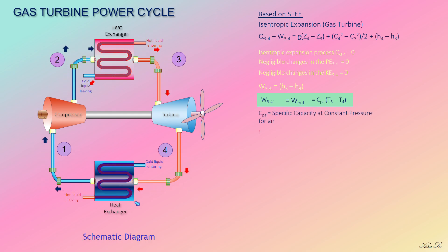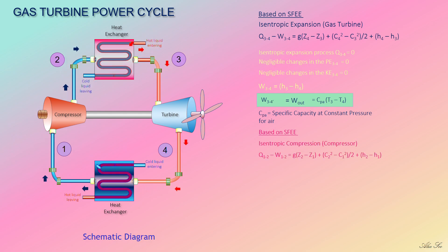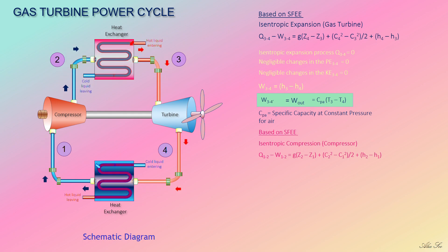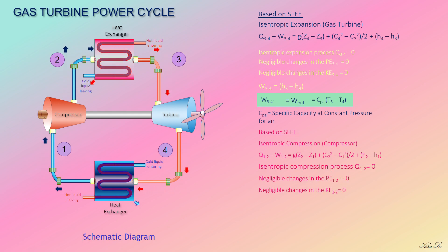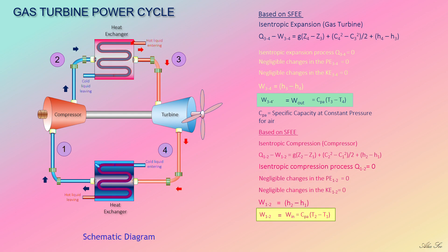For the compressor (process 1 to 2), which undergoes isentropic compression, we again apply the steady flow energy equation. Potential energy changes, kinetic energy changes, and heat transfer are all negligible, so q(1→2) = 0. This gives work(1→2) = h2 − h1 = cp·(T2 − T1). This is work input, whereas the turbine produces work output.